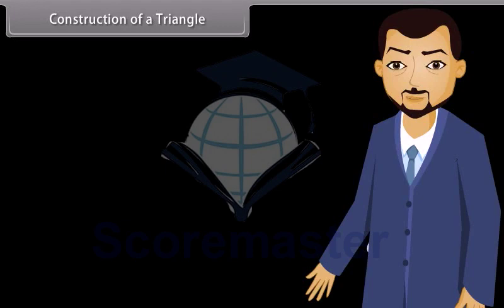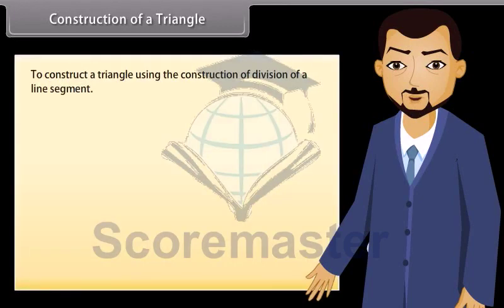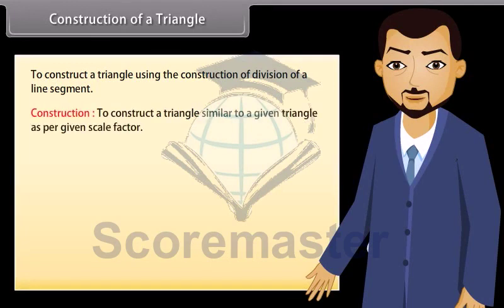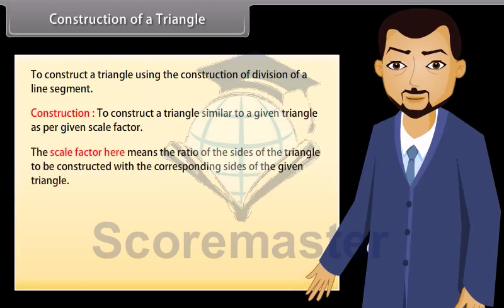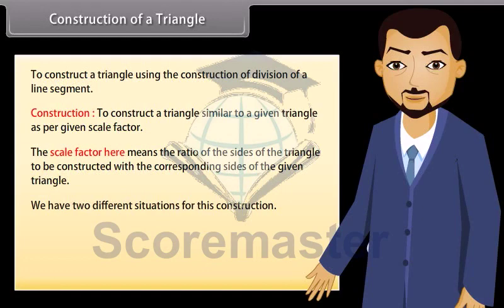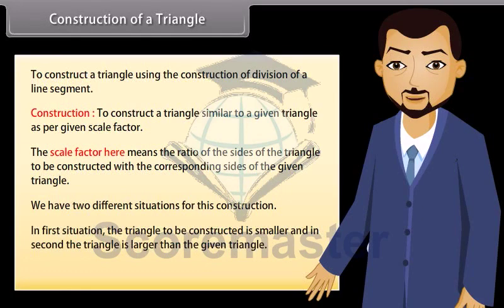Construction of a triangle: we will now learn to construct a triangle using the construction of division of a line segment. To construct a triangle similar to a given triangle as per a given scale factor, the scale factor means the ratio of the sides of the triangle to be constructed with the corresponding sides of the given triangle. We have two different situations: the triangle to be constructed is smaller, or the triangle is larger than the given triangle. We will solve some examples to understand this.